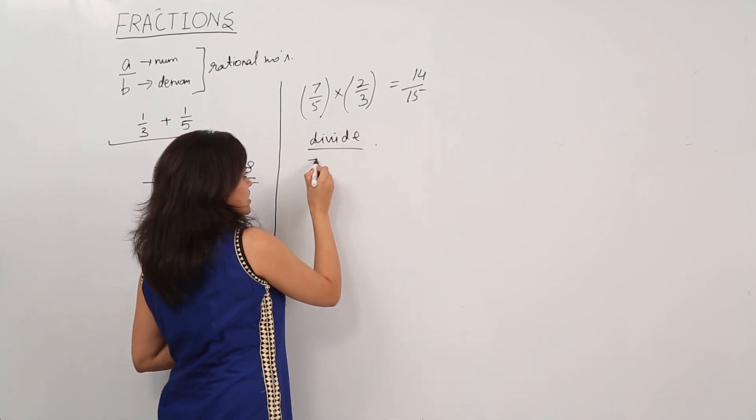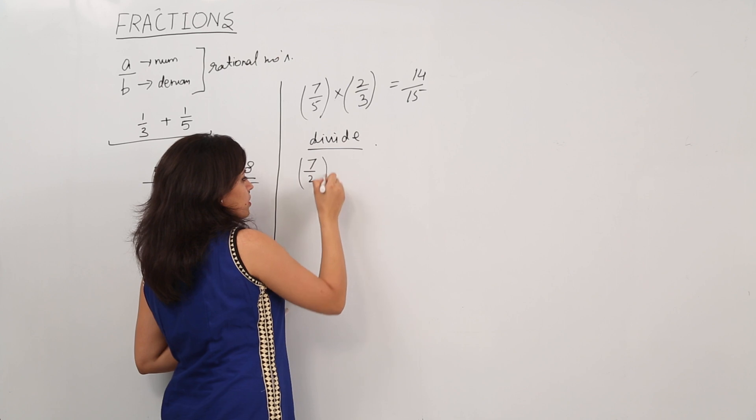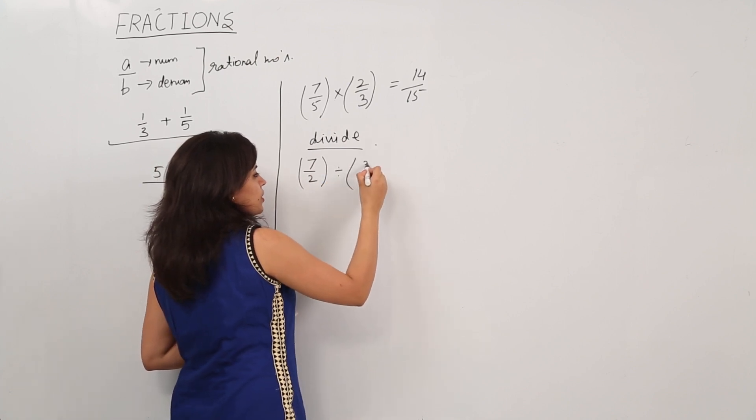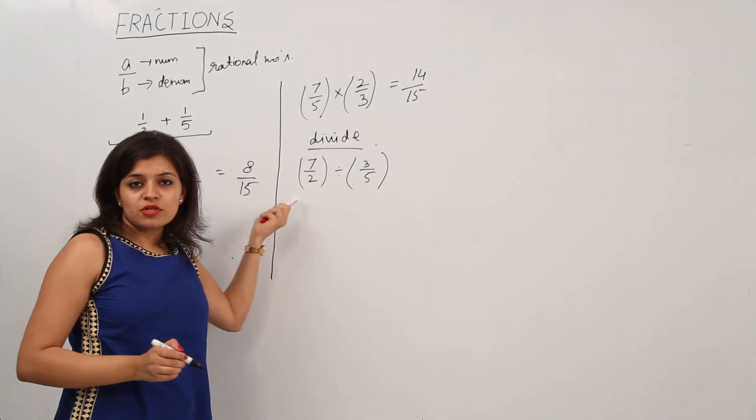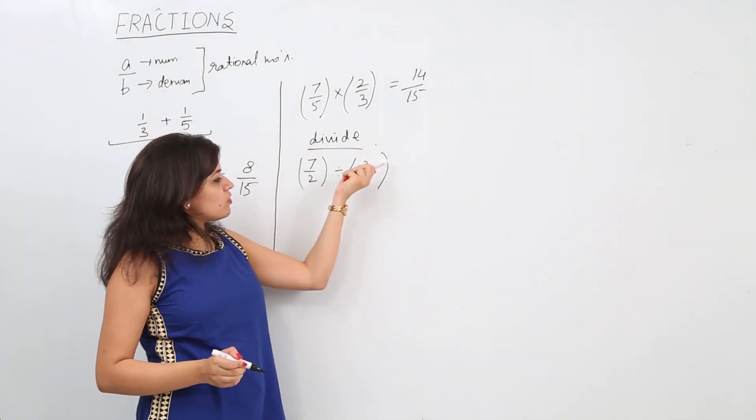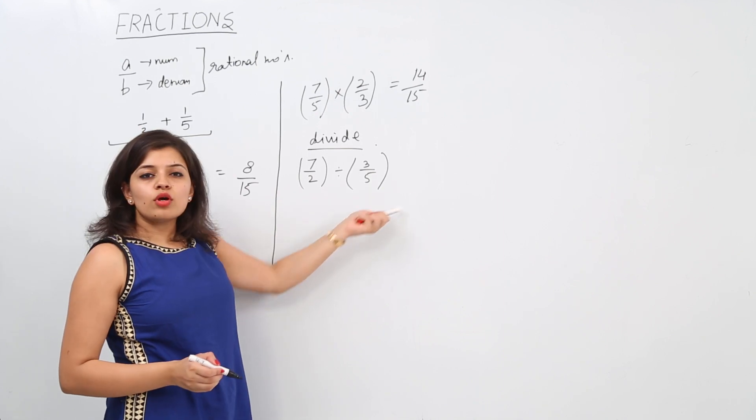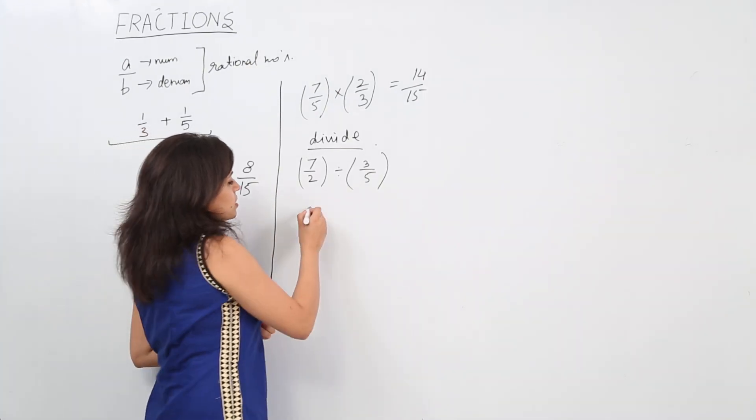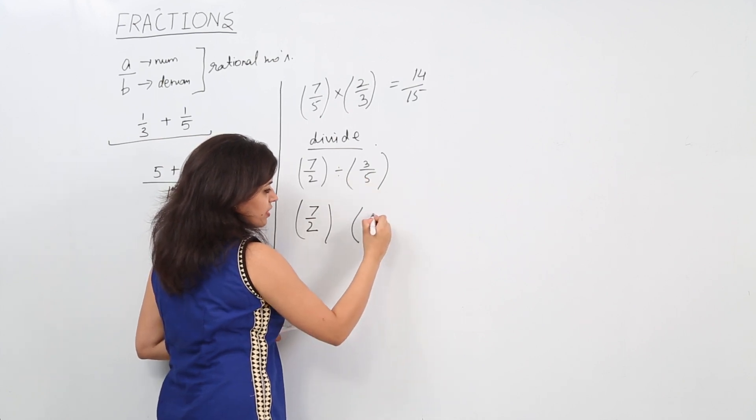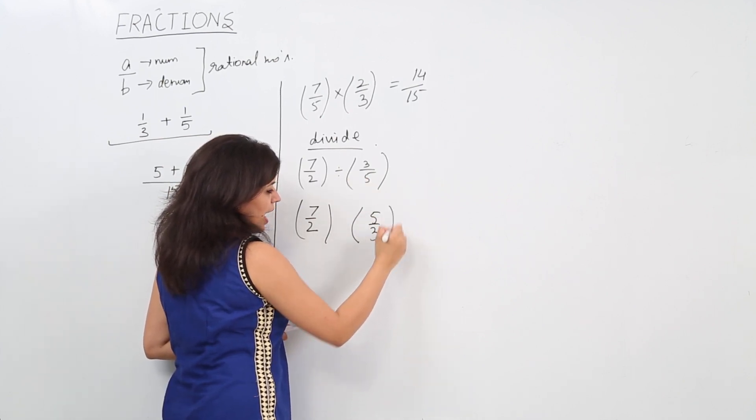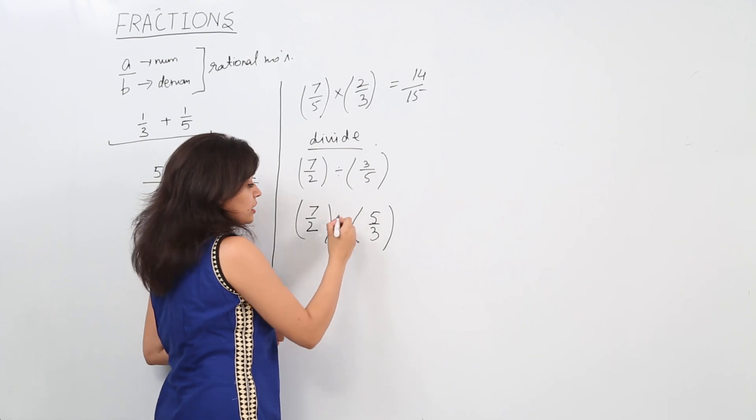Let's say we have a number 7 by 2 divided by 3 by 5. To divide 2 rational numbers we cannot simply divide 7 by 3 or 2 by 5. We take the reciprocal of the second number. We reciprocate the second, that is we write it as 5 by 3, and we change the sign from divide to multiply.